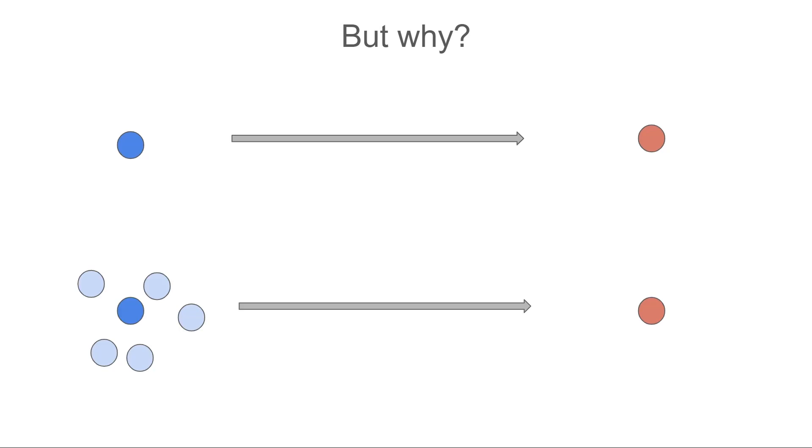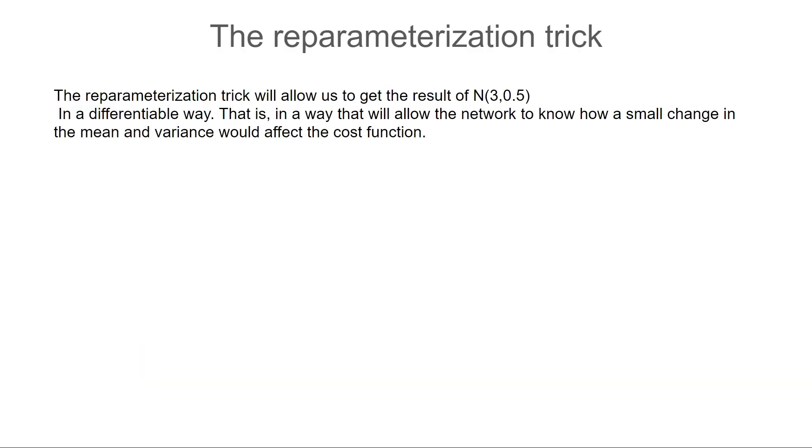After hearing my explanation about the variational autoencoder and given your knowledge about the backpropagation algorithm, you might ask how can we backpropagate the errors through a sampling layer. There is no gradient for randomly picking something. Well, that's a good question because we can't.